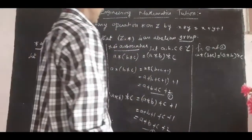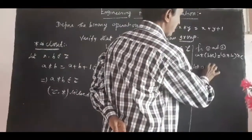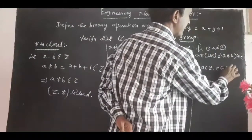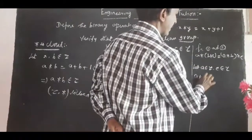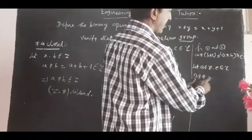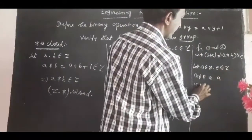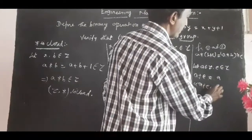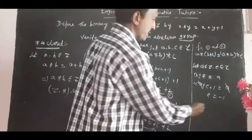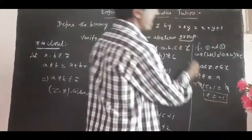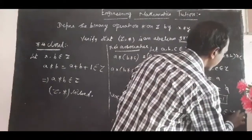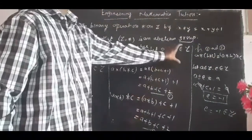Next we check the identity property. We need to find an element e in Z such that a star e equals a. So a star e equals a plus e plus 1 equals a. Cancelling a from both sides gives e plus 1 equals 0, therefore e equals minus 1. So e equal to minus 1 is the identity element, and it also belongs to Z, the set of integers. Therefore the identity property exists.